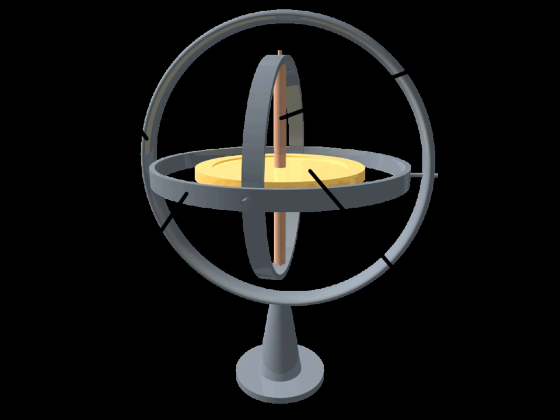A fiber-optic gyroscope also uses the interference of light to detect mechanical rotation. The two halves of the split beam travel in opposite directions in a coil of fiber-optic cable as long as five kilometers. Like the ring-laser gyroscope, it makes use of the Sagnac effect.